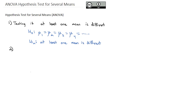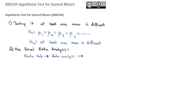In order to do the calculations for the ANOVA test, we are going to use the Excel Data Analysis tool pack. We'll first go to the Data tab, click the Data Analysis button, and then select ANOVA Single Factor.